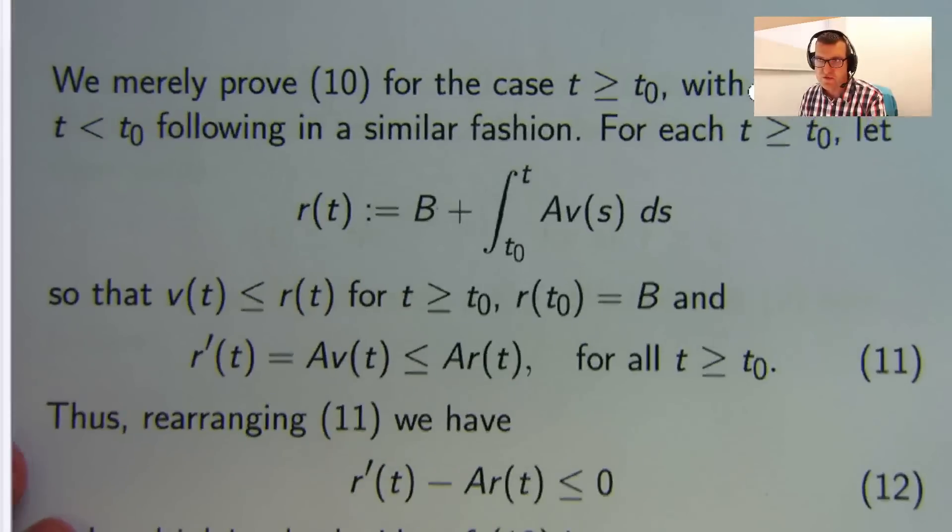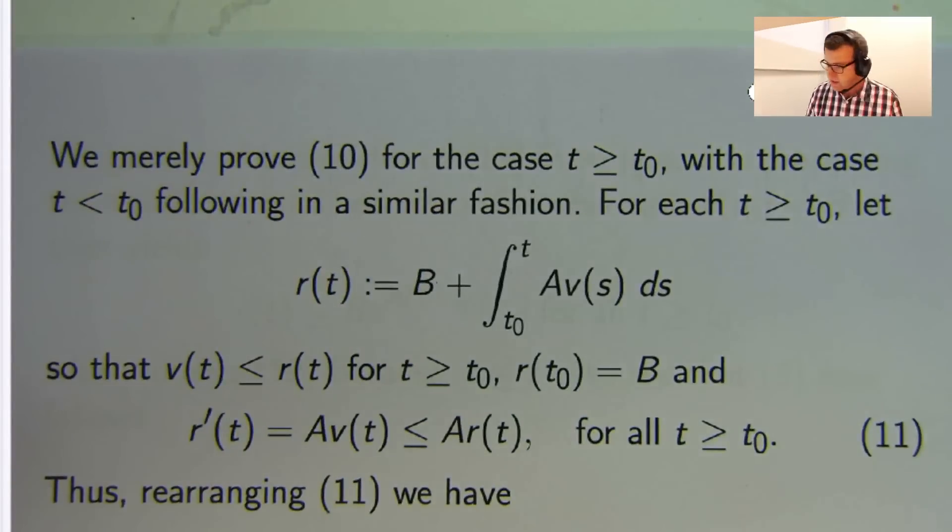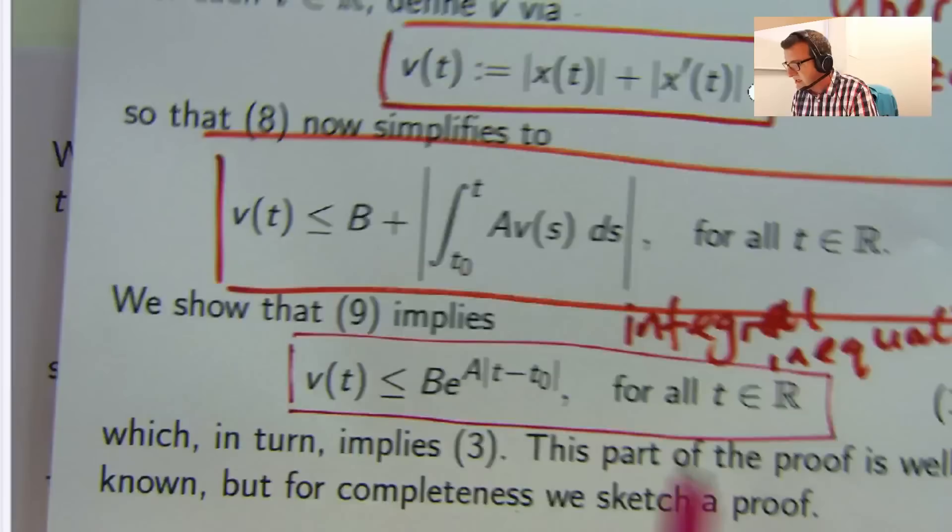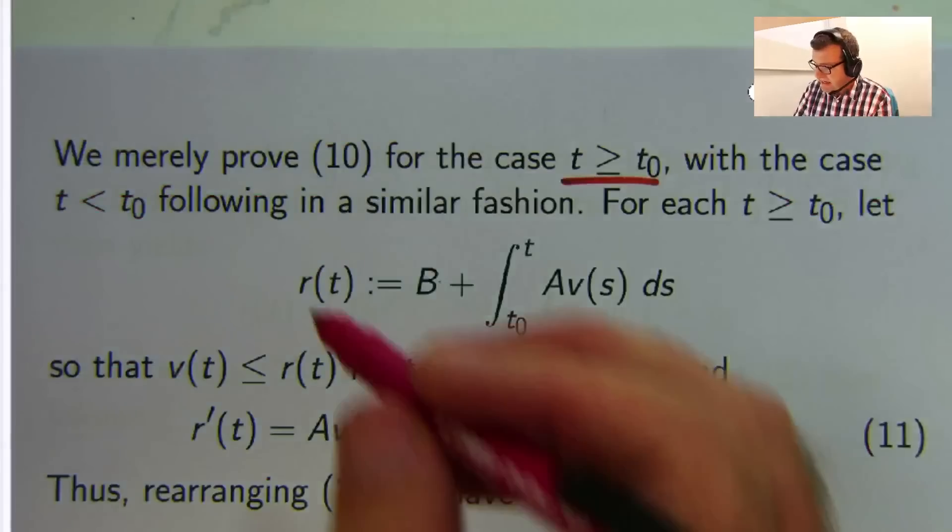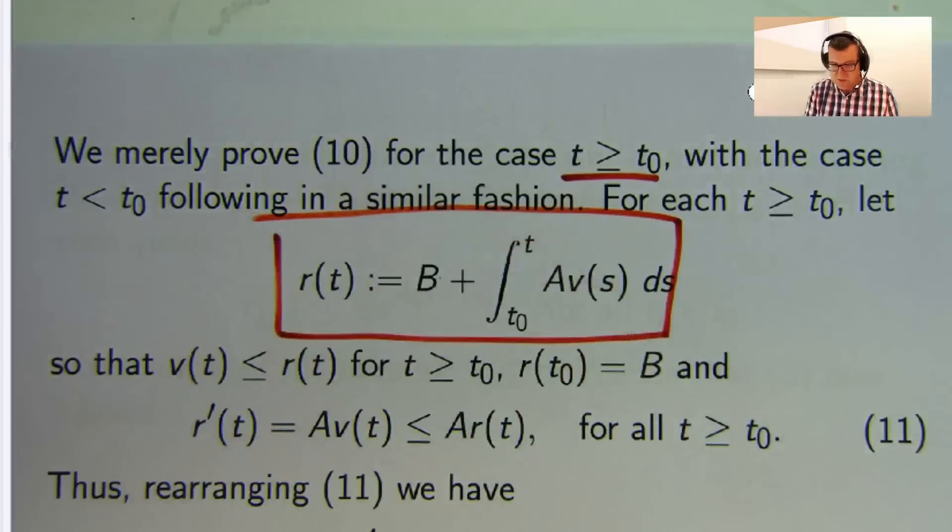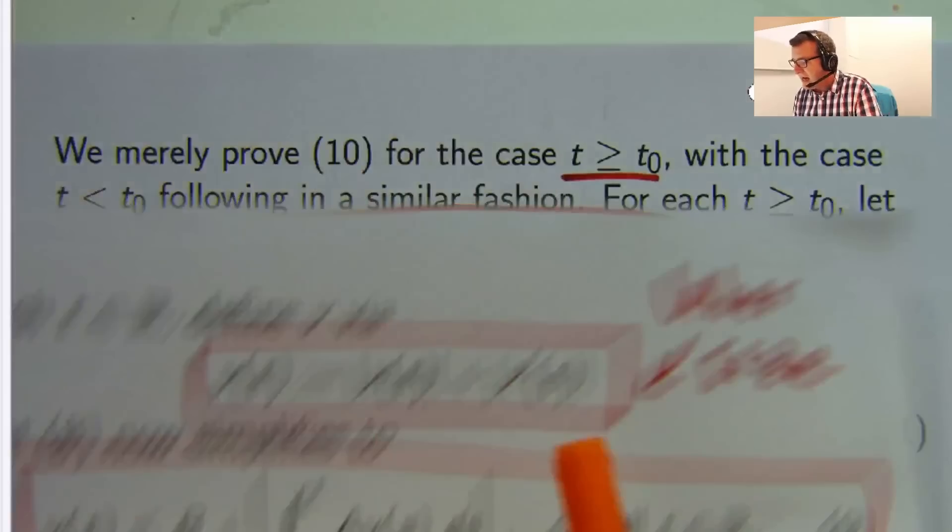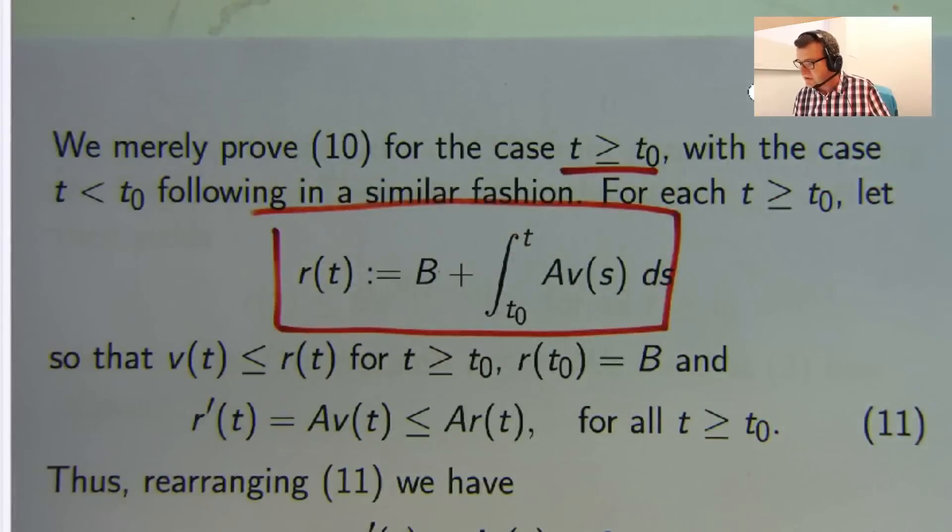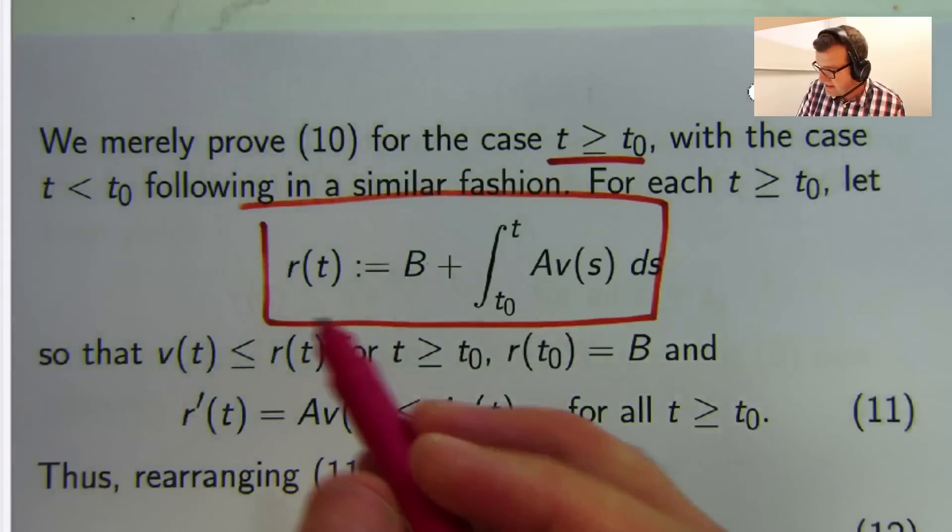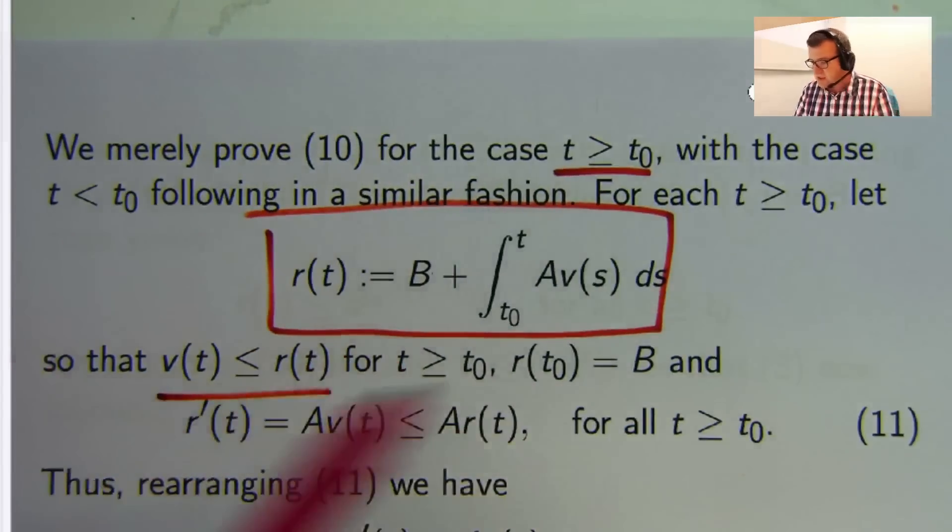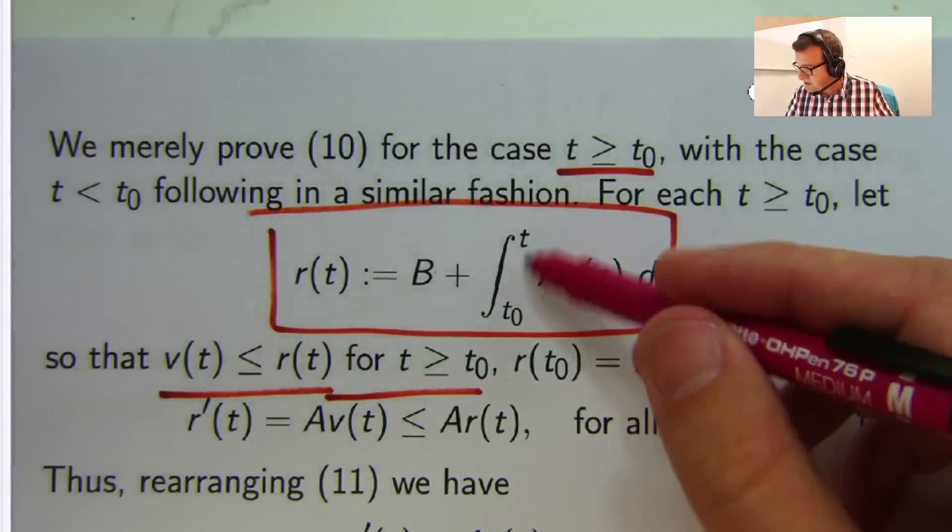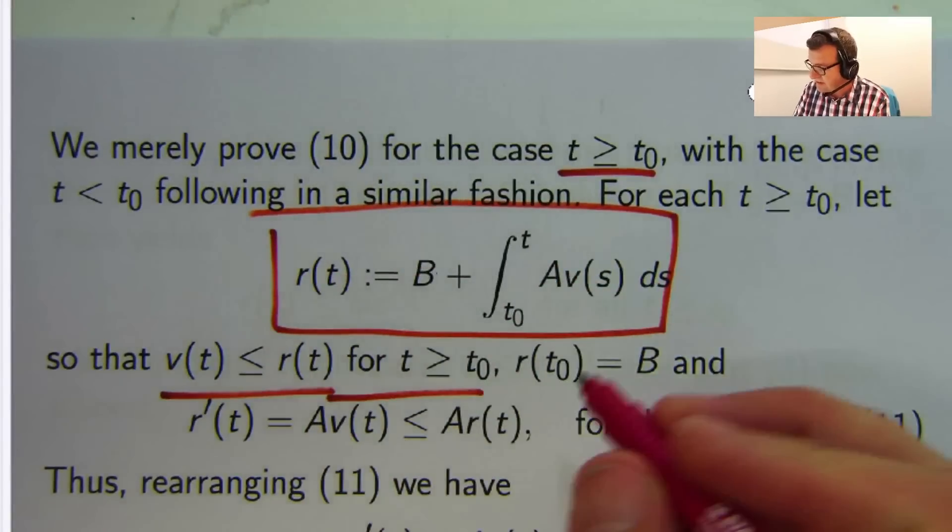The case when T is greater than T naught. So in the case when T is greater than T naught, the absolute value signs disappear here. And what we're going to do, we're going to let R be a new function that's just that right hand side with no absolute values. So if you see then that under this definition of R, because (9) holds, v has got to be less than or equal to R. And if I put T equals T naught in here, this disappears and R of T naught is B.